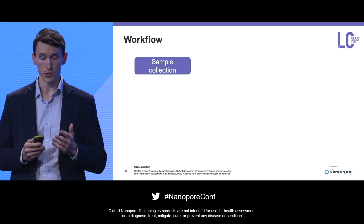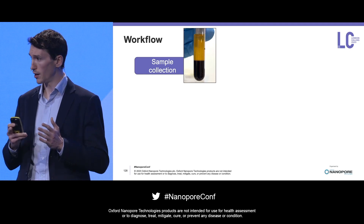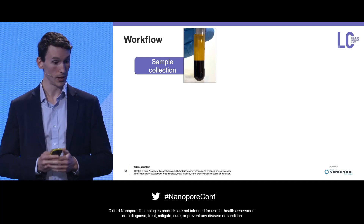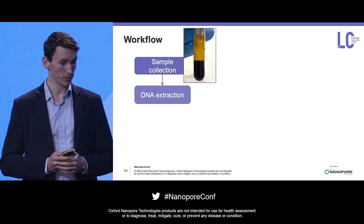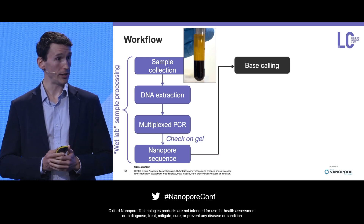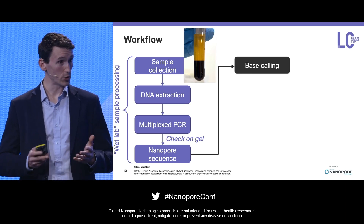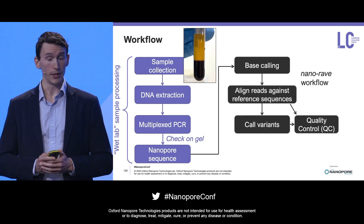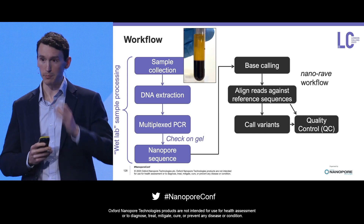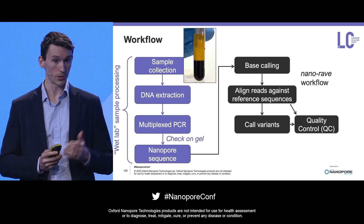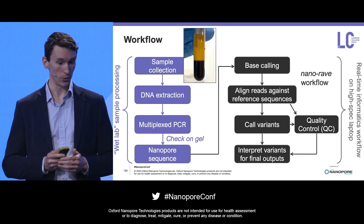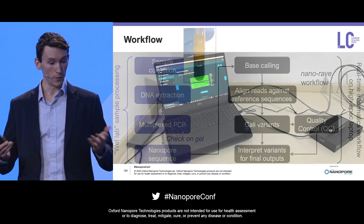This was the workflow: we collected the samples — the data I'm going to show today was from venous blood samples, though we have also tested it on small volume blood blotted onto filter papers called dry blood spots, and the assay works very well from that too. We extract the DNA, do the PCR, then the Nanopore sequencing — that's all the wet lab side. We had real-time base calling using super accurate base calling with Guppy on laptops with high-powered GPUs, and then an informatics workflow we called Nanorave — the Nanopore Rapid Analysis and Variant Explorer tool — where reads are mapped to the reference sequences for the drug resistance genes, variants called using Medaka haploid, and the variant call files interpreted, all running in real time off the same laptop.